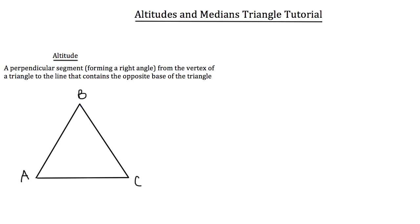We want a line to come down from vertex B that's going to intersect the base AC perpendicularly — so at a right angle. I'll draw a line from B down. You can tell that it's coming from vertex B and it's going to intersect the line that contains the opposite base. In this case it actually intersects the opposite base at a 90-degree angle.